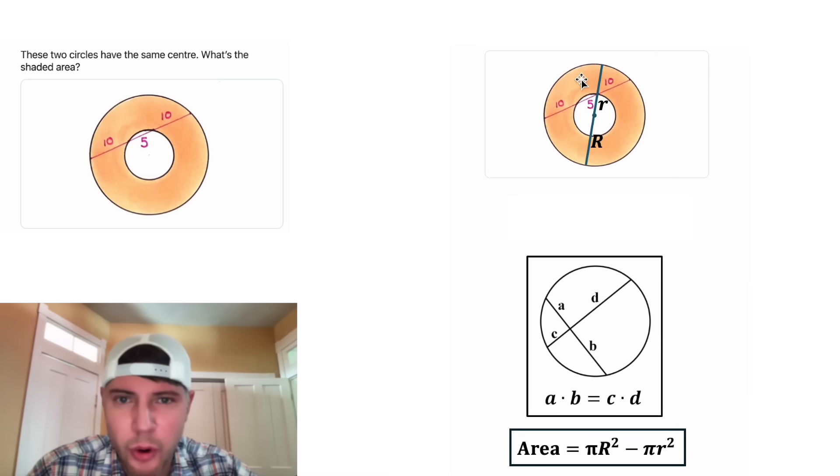Now that we've proven it, let's use the intersecting chords theorem. Let's find this distance right here. Well, this whole thing is big R and then this piece is little r, so this portion will be R - r. And then for this part of the chord, it's going to be R + r. And then for the other chord, this portion is equal to 10, and this portion is equal to 10 plus 5, which is 15.